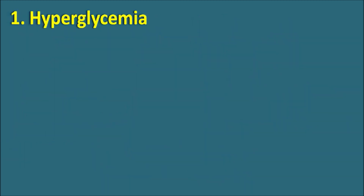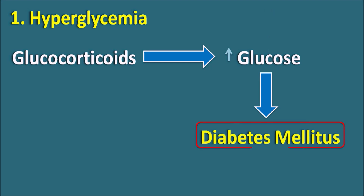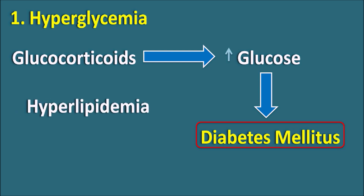The first side effect is hyperglycemia. Glucocorticoids increase glucose levels, and these elevated glucose levels may precipitate acute diabetic episodes in patients. When glucocorticoids are used for a longer period, glucose levels should be carefully monitored, and in patients already having diabetes, these drugs should be given carefully. Apart from glucose, glucocorticoids can also increase lipid levels, resulting in hyperlipidemia, and can also increase water retention.